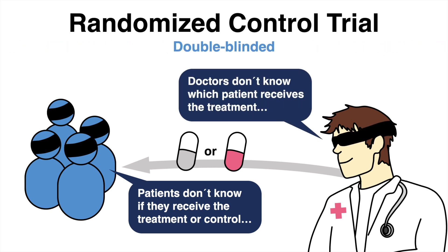In a double-blinded study, neither participants nor investigators know which treatment the patients have received. This ensures that clinicians act objectively when evaluating the patients. For example, a doctor who knows that a patient has received the experimental treatment might be more inclined to report improvement in the disease. Blinding eliminates these sources of bias.